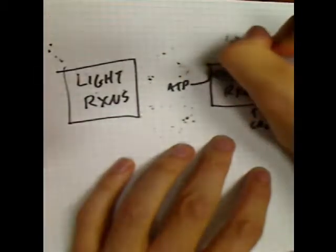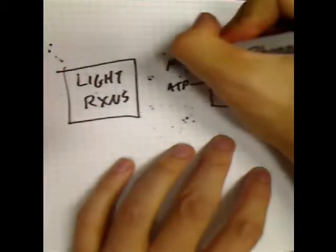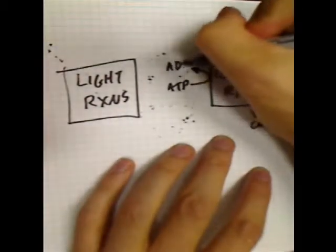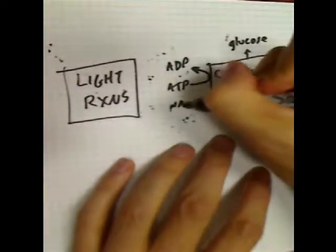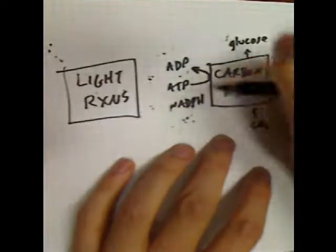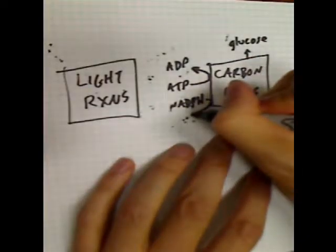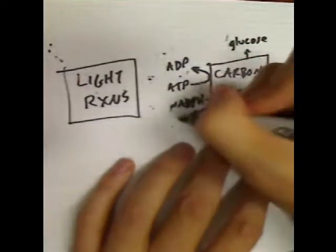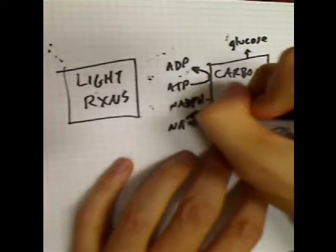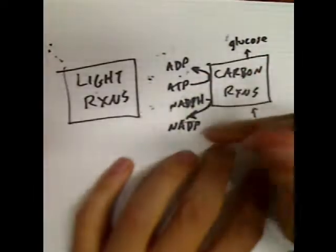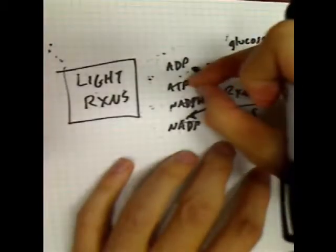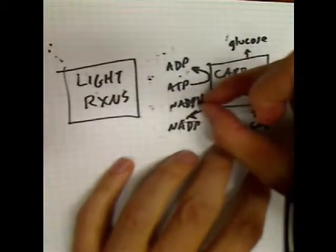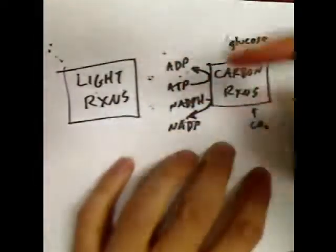The energy for the carbon reactions comes from ATP — these reactions take ATP and use its energy, producing ADP in the process. It also comes from another high-energy molecule called NADPH, which gets converted to its low-energy form NADP. Where do the ATP and NADPH come from? They come from the light reactions.